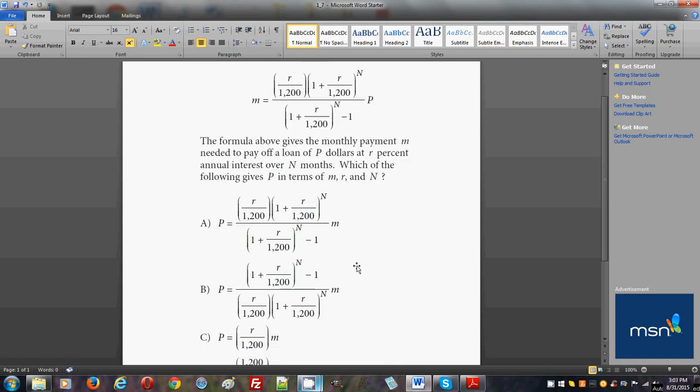Is it listed? Bingo! In answer choice B, this numerator is the denominator. As a result, p is expressed correctly: 1 plus r over 1200 raised to the n minus 1, divided by r over 1200 times 1 plus r over 1200 raised to the nth power.